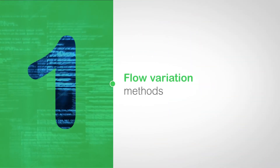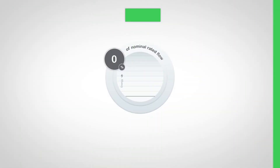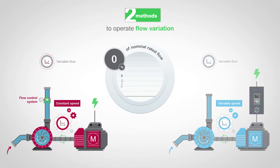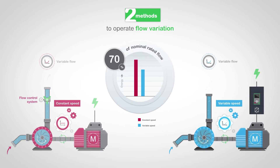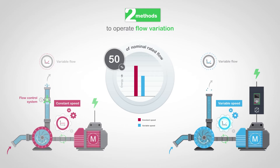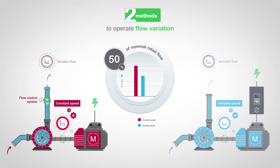Let's start by comparing the methods. Flow variation can be achieved with two different methods. The first method, presented on the left, is to use a flow control system and keep the motor running at rated speed — in this case, losses will increase with the amplitude of the flow variation. The second method, presented on the right, is to use a variable speed drive to vary the speed of the motor and therefore the flow. The energy efficiency is optimum with minimal losses.